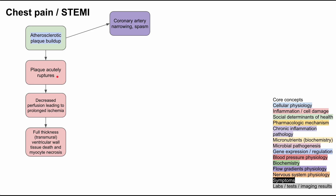Starting with acute plaque rupture: this can lead to decreased perfusion and prolonged ischemia. If this happens abruptly, you can have a full thickness — also known as transmural — ventricular wall death, where the tissue itself dies and the myocytes necrose. The cells are actually dying for the full thickness of the heart tissue.